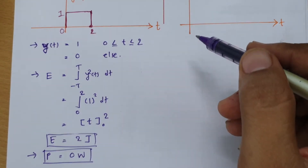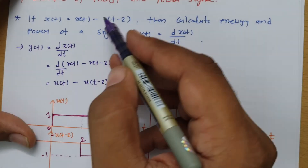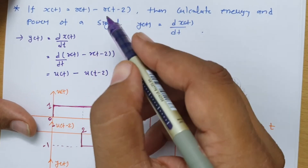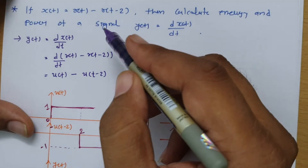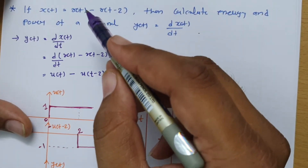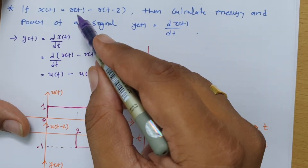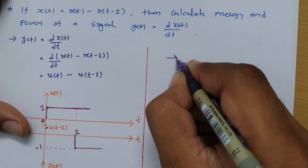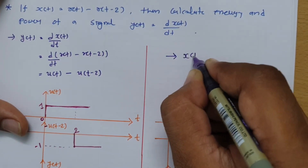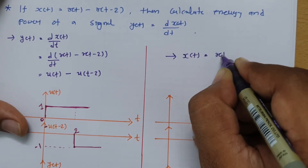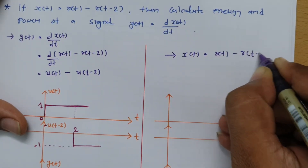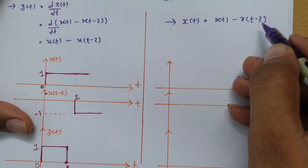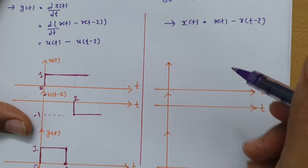Now there could be another question in the same problem: determine whether X(t) itself is an energy signal or a power signal, where X(t) = r(t) - r(t-2). To identify this, let us analyze X(t) directly.